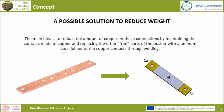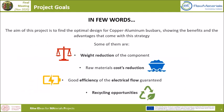Our idea is to replace the central part of the bus bar from copper to aluminum, but it's necessary to maintain the copper contacts and join the two parts by welding. Our project has some advantages like weight reduction, cost reduction, good efficiency and recycling opportunities. The project goal is to find the optimal design to have a bi-material copper and aluminum bus bar.